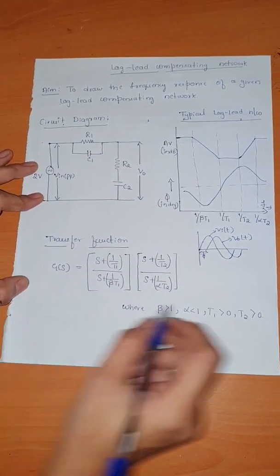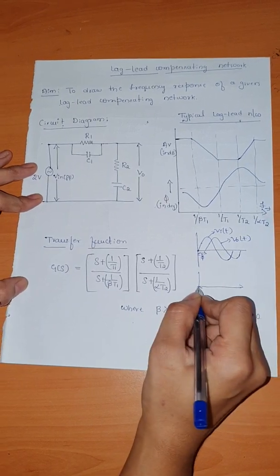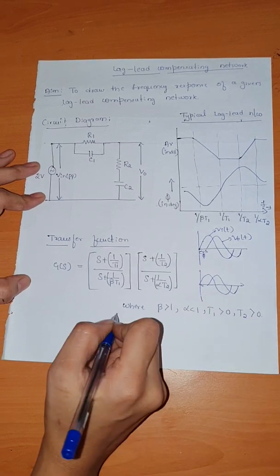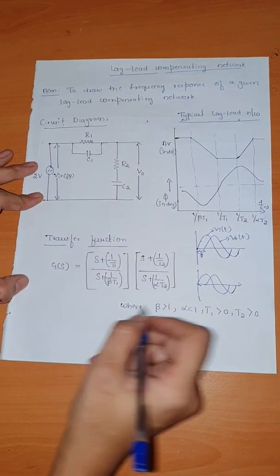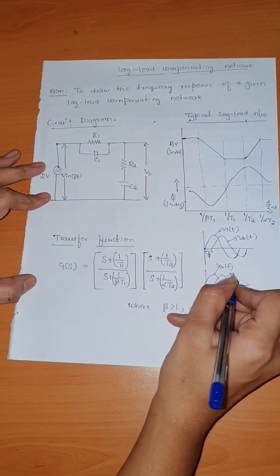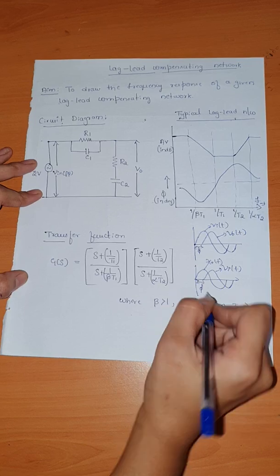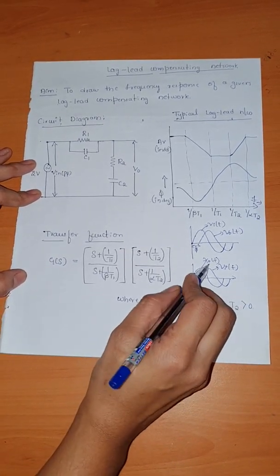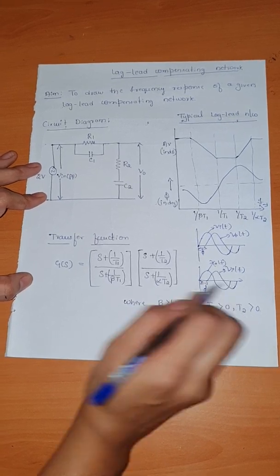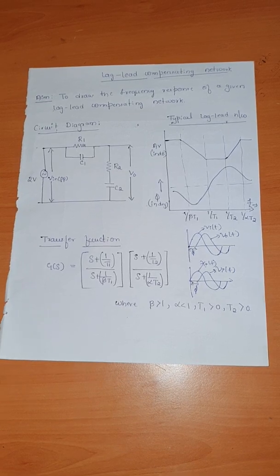Similarly, the lead compensating network means when you apply a sinusoidal input to the system, a sinusoidal output will be produced. But in case of a lead compensating network, the output will be leading with phase angle phi. So the output leads while the input lags — this is what we call a lead compensating network.